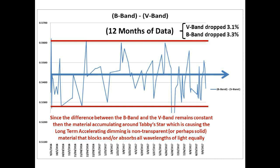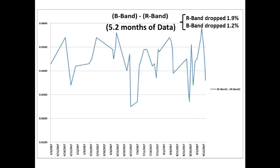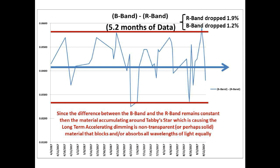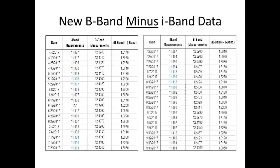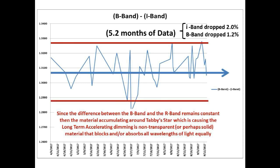This table contains the R-band and B-band measurements taken by David Lane over a 5.2-month time frame, and this is the graph of the B-minus-R-band deltas, where we had a drop in flux of over 1.2 percent. Notice the flat flux response again over this time period, again signifying a non-transparent material. Finally, this table contains the B-band minus I-band measurements, also taken by David Lane over the same 5.2-month time frame. The B-minus-I-band deltas again show a drop in flux of over 1.2 percent — a third confirmation of a flat flux response across different band comparisons.